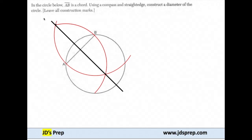Now if you look, that black line is a diameter of our circle. Not only that, but it's a perpendicular bisector of chord AB.